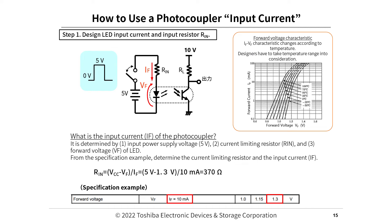Step 1: Design LED input current IF and input resistor RIN. The input current IF of the photocoupler is determined by: (1) input power supply voltage of 5V, (2) current limiting resistor RIN, and (3) forward voltage VF of the LED. From the specification example, determine the current limiting resistor and the input current IF.